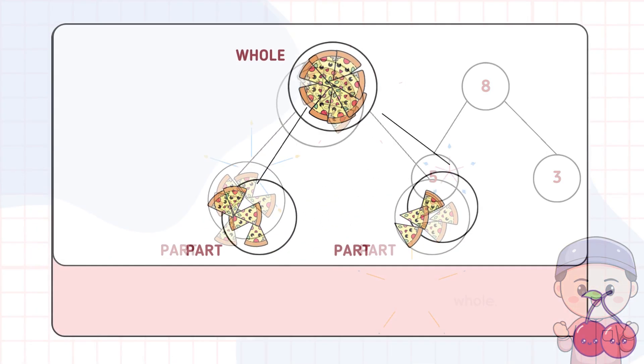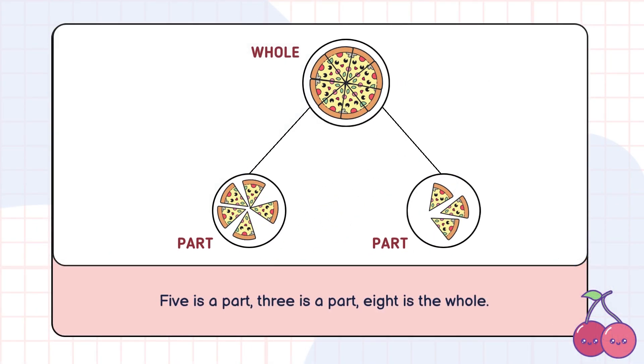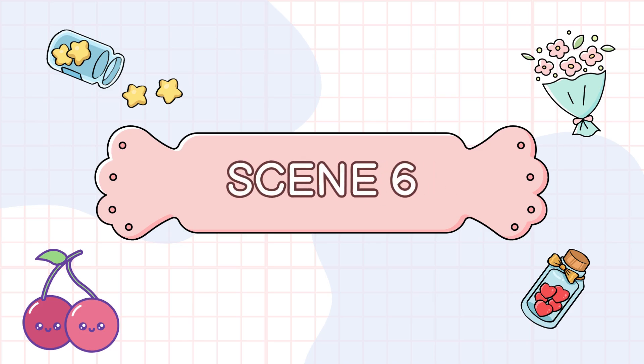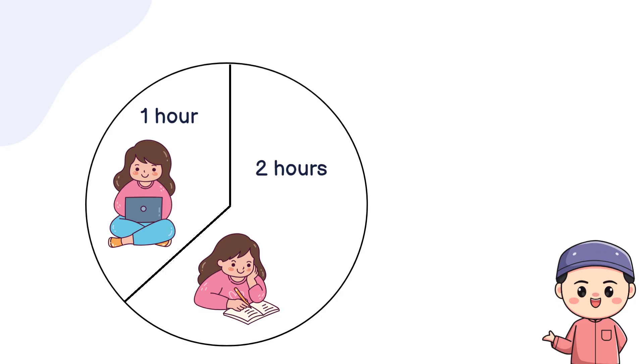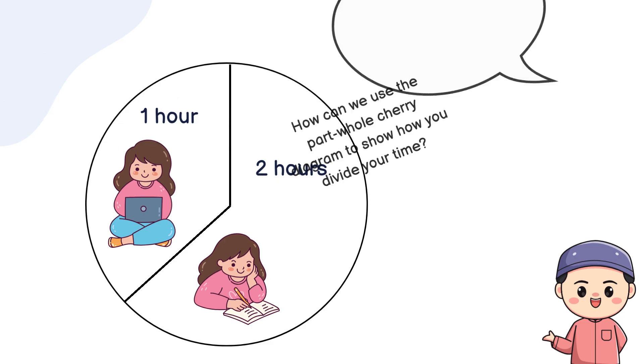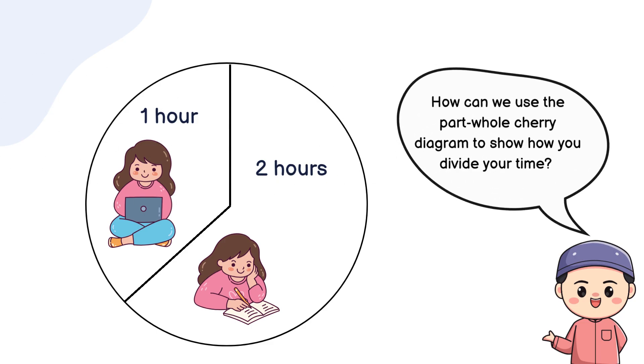Let's move from pizzas to time management. Time to achieve some goals. Imagine you have 3 hours after school. How do you spend it? Let's say you spend 2 hours on homework and 1 hour playing. Here's a question. How can we use the part-whole cherry diagram to show how you divide your time? Go ahead and pause the video to figure it out.